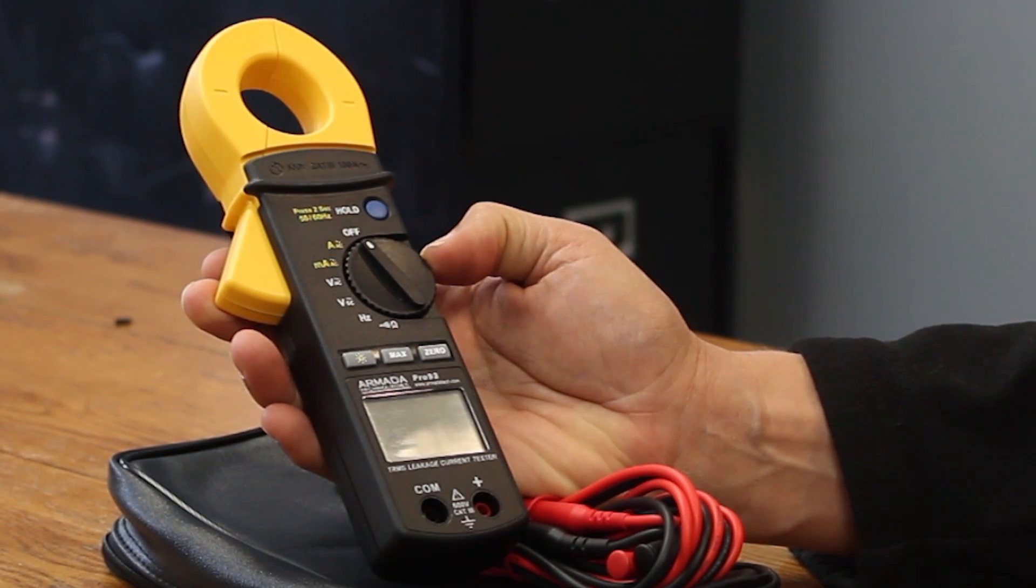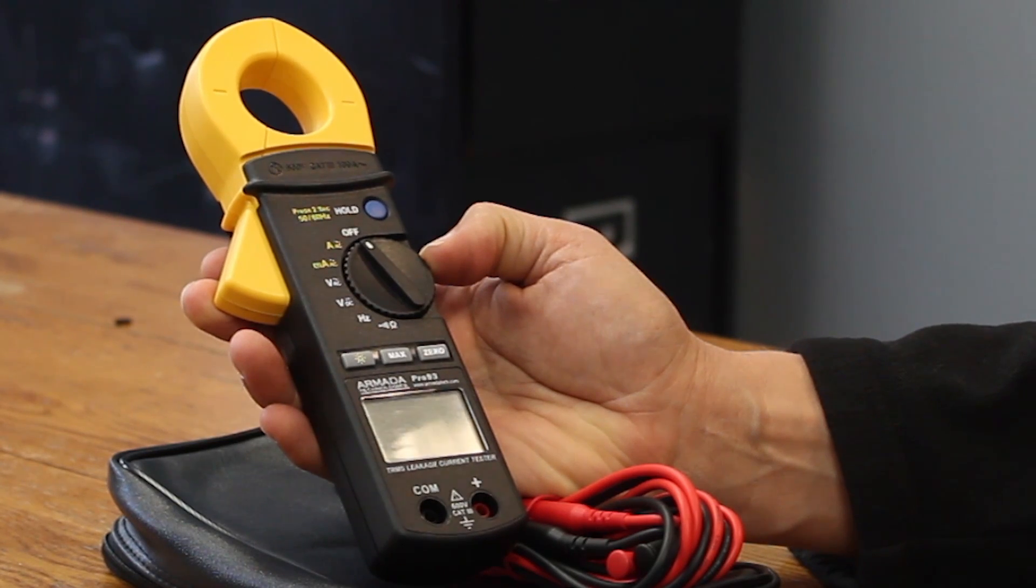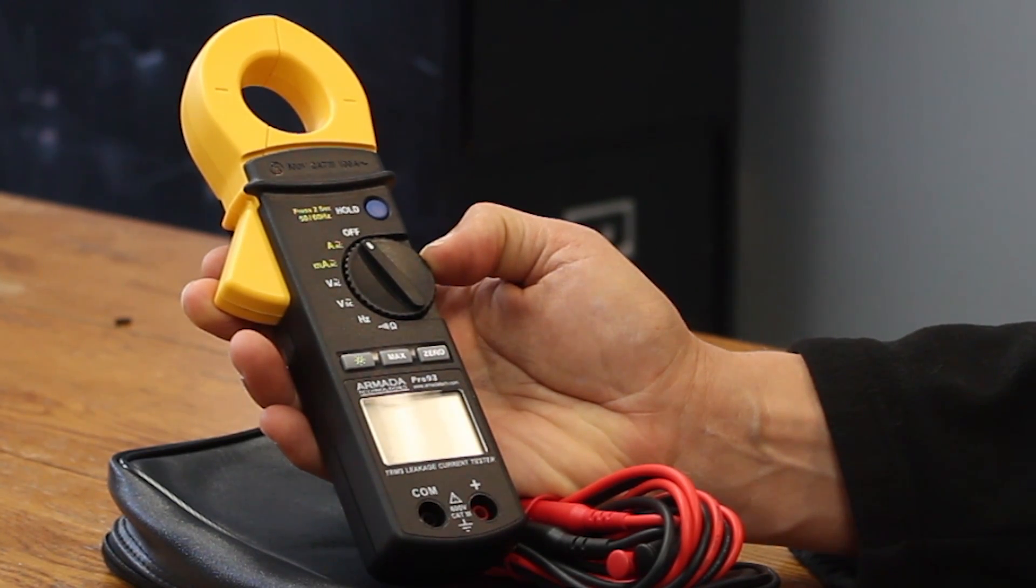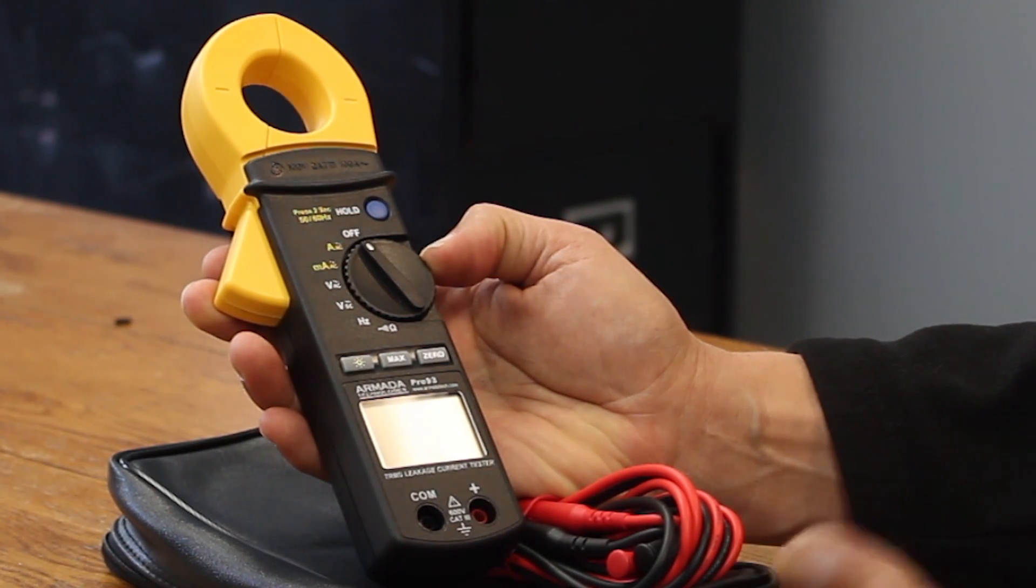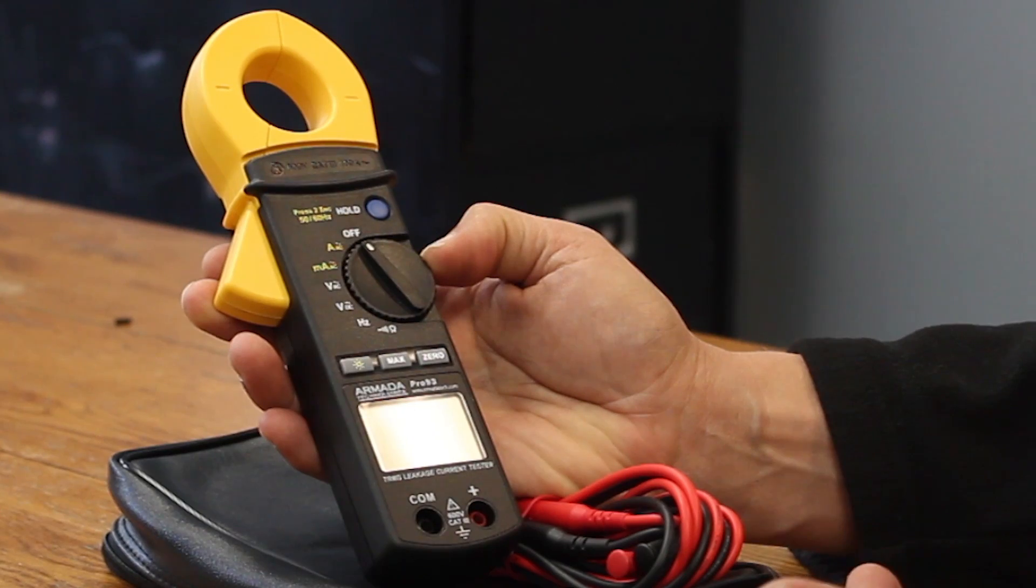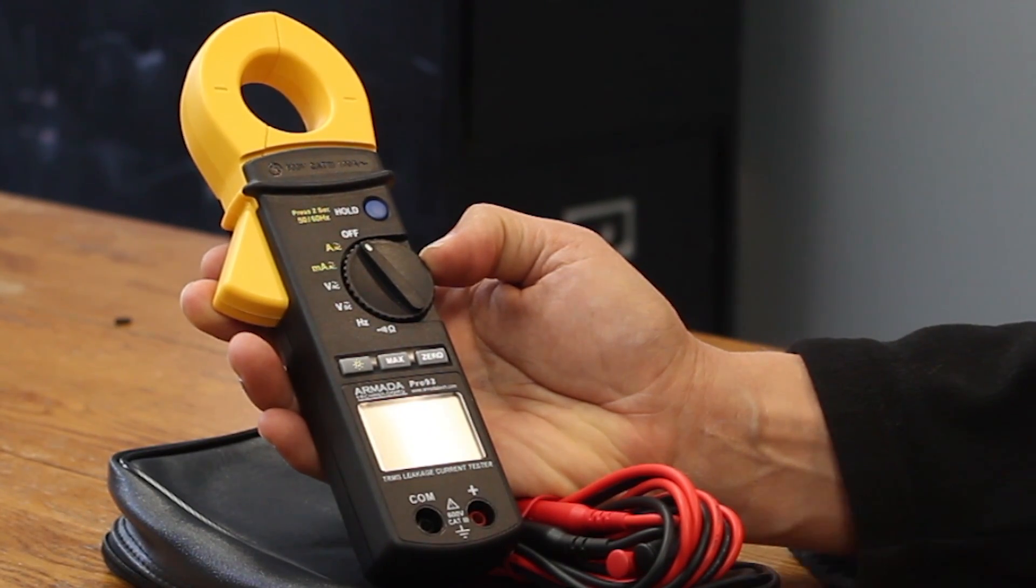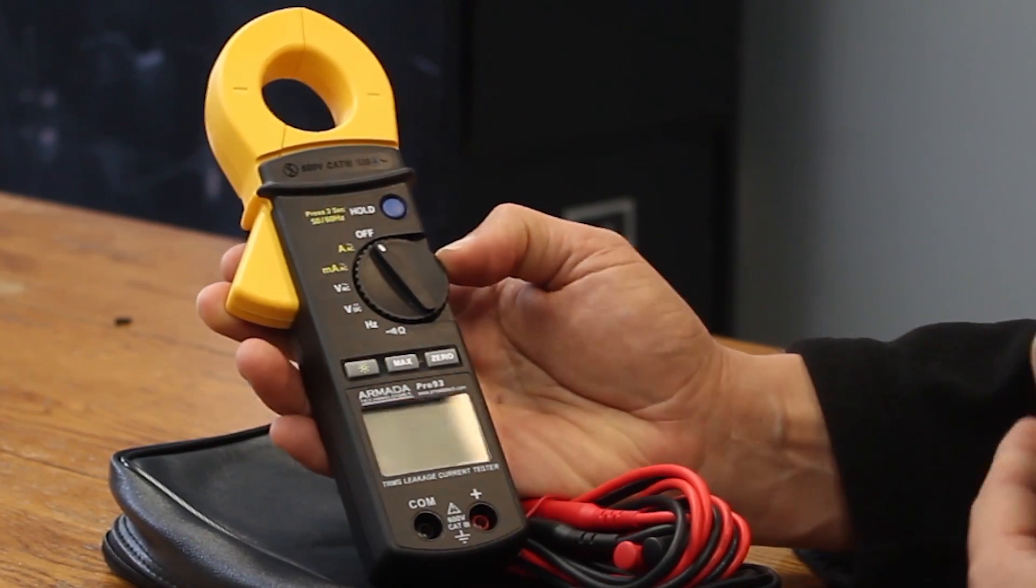Today I want to talk about troubleshooting two-wire systems with a milliamp clamp meter. If you're working with two-wire systems, a milliamp clamp meter is a must. All the manufacturers recommend you have one of these. The Irrigation Association teaches that you need one. These are a must-have tool for a two-wire system.